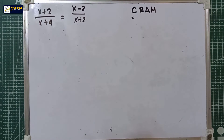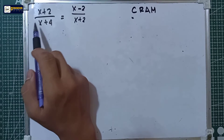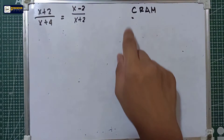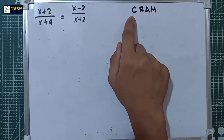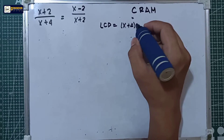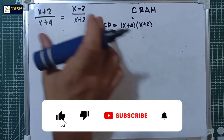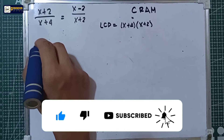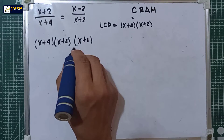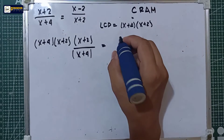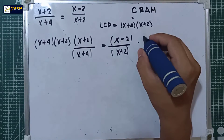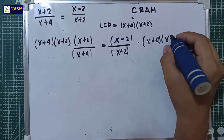Now let's try another rational equation: (x + 2) / (x + 4) = (x − 2) / (x + 2). For letter C, clear all fractions by multiplying by the LCD. The LCD is (x + 4)(x + 2). Multiplying both sides by this LCD, the denominator (x + 4) cancels on the left and (x + 2) cancels on the right.